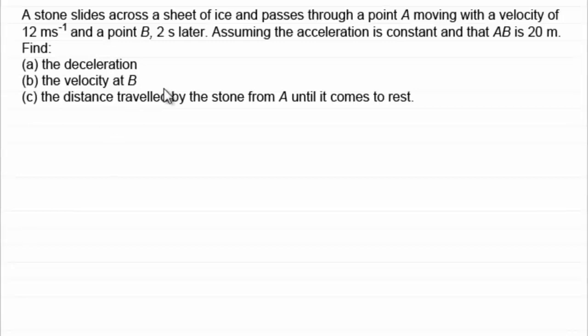In this example, what I've got is motion on a horizontal plane. So what we've got here is a stone slides across a sheet of ice and passes through a point A, moving with a velocity of 12 meters per second, and it passes also through a point B two seconds later.